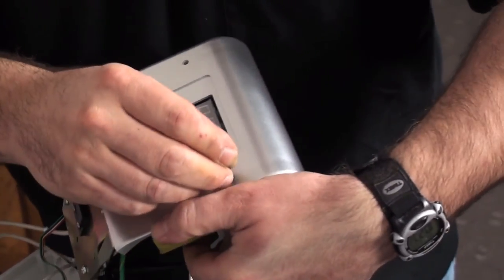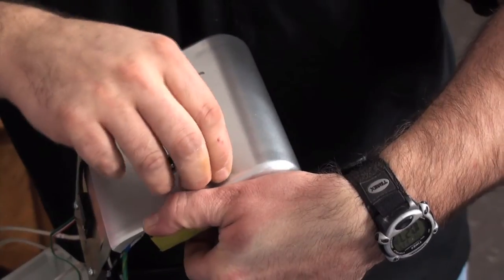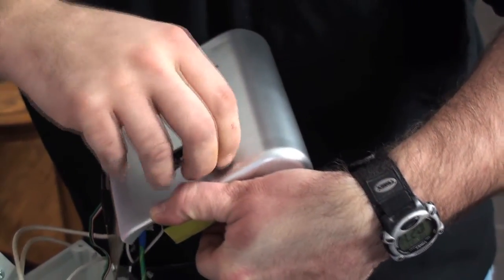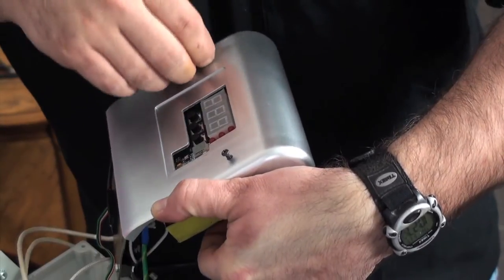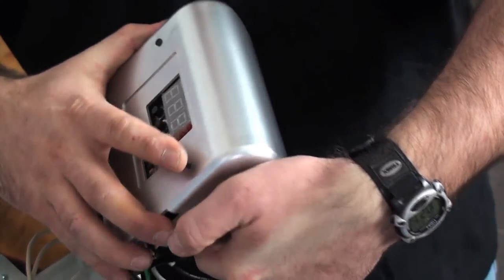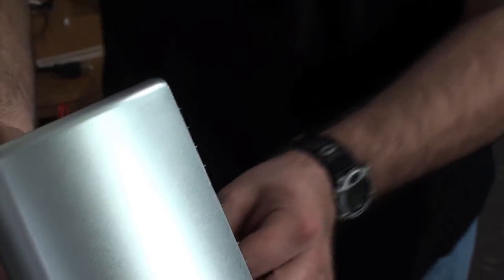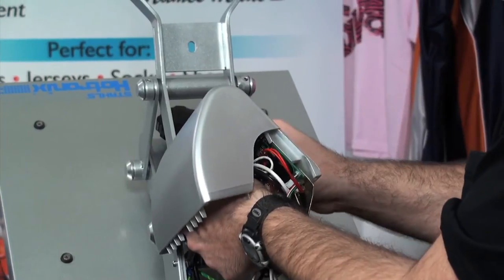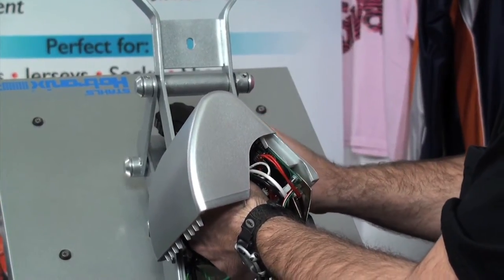Thread the control board screws you removed earlier through the top control housing and the control board. Carefully place the nut over the end of the bolt and hold in place while tightening. Be sure not to over tighten as they could damage the board.